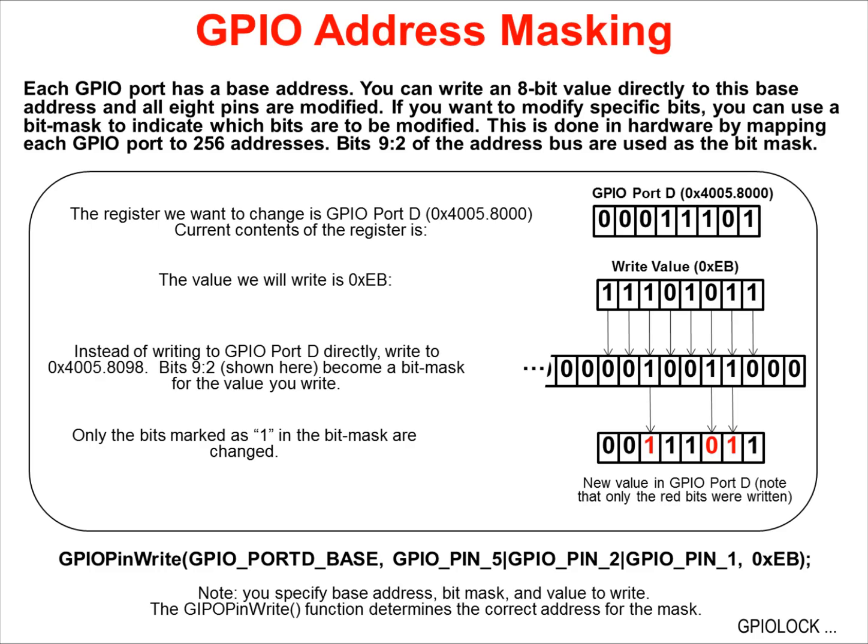For instance, if an interrupt changed a pin state during this process, your code would write the wrong value to the pin. On the Tiva C-Series parts, each port has 256 possible addresses covering every possible combination of the port pins.